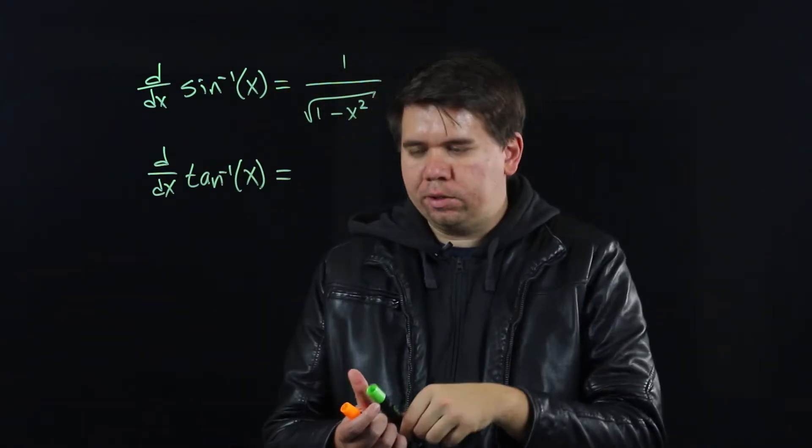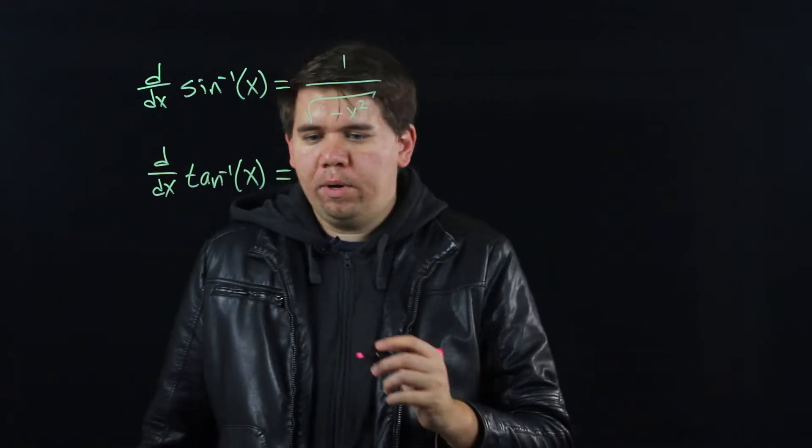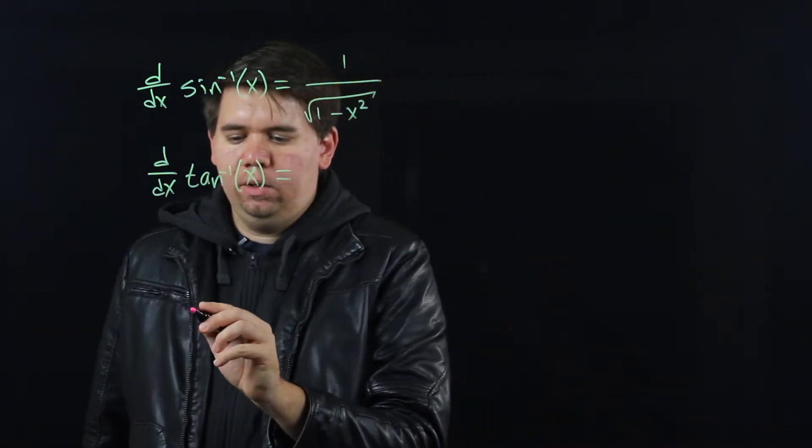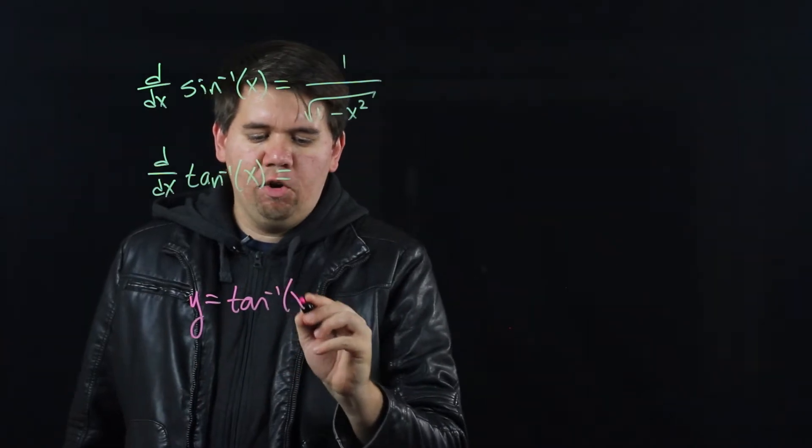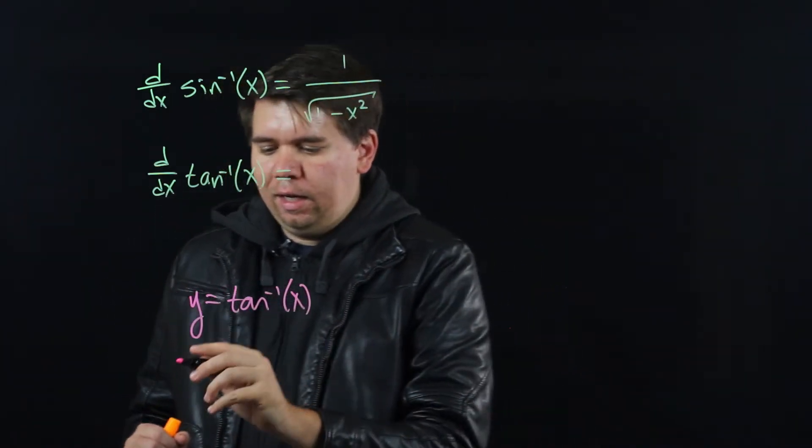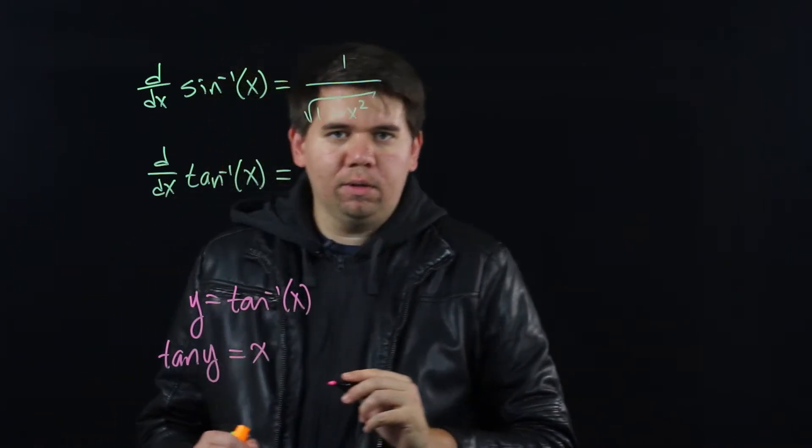We'll take a similar approach. We don't know how to find the derivative of tan inverse, but we can reimagine y equals tan inverse of x. We can reorder that to say that's the same as tangent of y is equal to x.